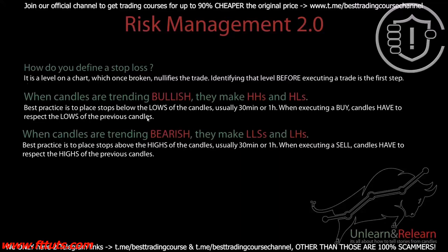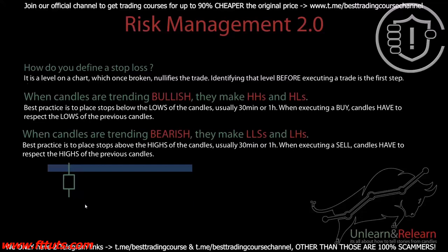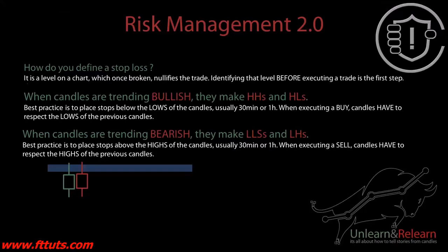When candles are moving bearish, they will make lower highs and lower lows. Best practice is to place stops above the highs of the candles — usually on the 30-minute or one-hour timeframe. When executing a sell, candles have to respect the highs of the previous candles. For example, if you have a resistance level and a candle moving bullish into resistance, you don't want to take a sell yet — you wait for a bearish candle to form first.